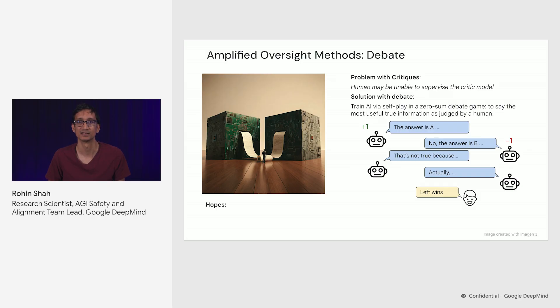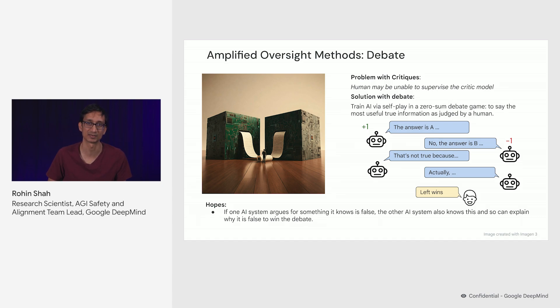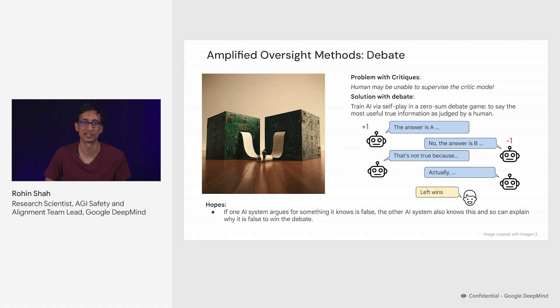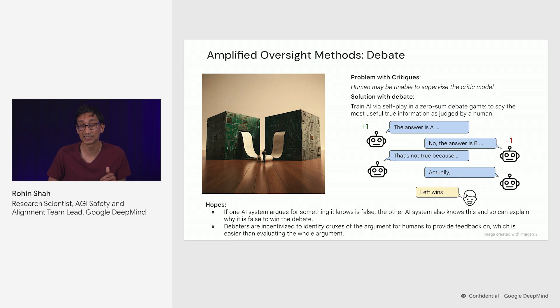So there are some key hopes that are associated with debate. Since we're doing self-play training, the two debaters are copies of the same AI system. So if one AI system argues for something that it knows to be false, then the other AI system should also know that it is false and can explain why it's false, and that would let them win the debate. That is, it should be possible for the AI system to refute any lies, which enables the human judge to know what the true correct answer is. Another hope is that the debaters are incentivized to identify the cruxes of the arguments, so this will naturally break the harder questions down into easier pieces, and that makes it easier for the human judge to be able to give accurate feedback.